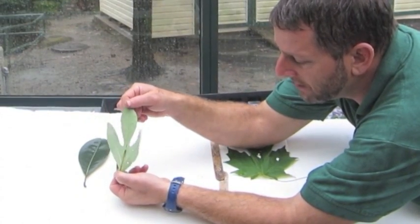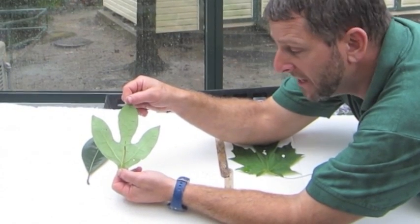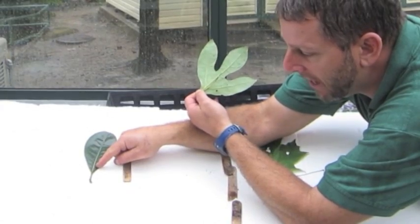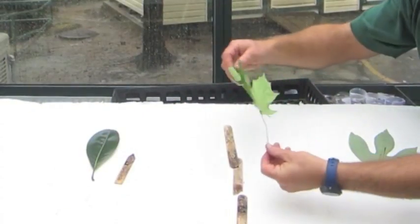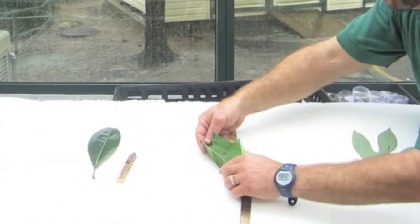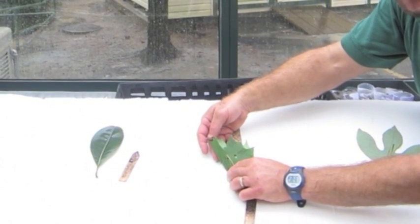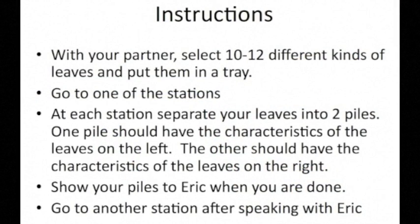When I bend this last one, it almost goes to halfway, so I would say this is a medium petiole. Short is much less than half. Medium is about half. And long is almost as big as the whole blade or more. Those are the three different types of petioles. Now you've seen how scientists describe the different parts of a leaf, and now we're going to do an activity where you will sort leaves by the characteristics that scientists use to describe them.